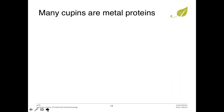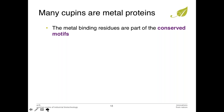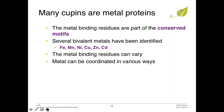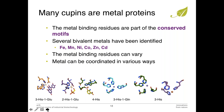Many cupins are metal proteins, and if they are, the metal binding sites are part of a common motif. The most common metals found are iron, but also manganese, nickel, cobalt, and zinc. The metal binding sites vary — there are sites with three or four amino acids involved. Sometimes you have up to four histidines, or three histidines and one glutamate — all variations are possible, leading to different geometries of the metal.